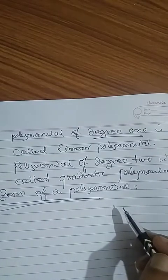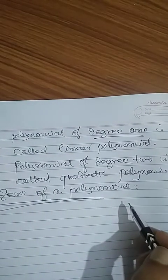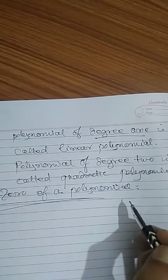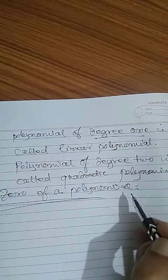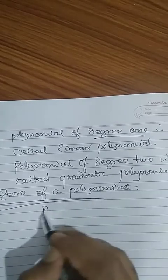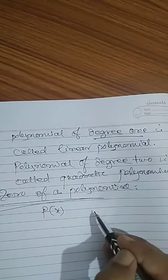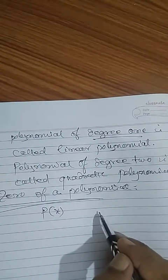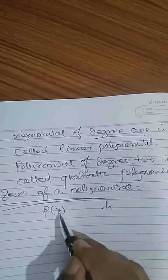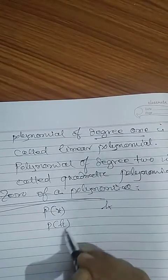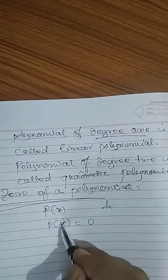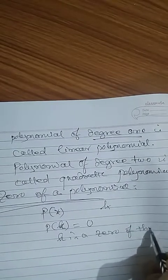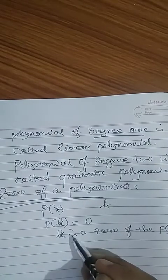Just I want to recall: by replacing the variable by any real number, if the polynomial becomes zero, then that number itself is a zero of the polynomial. Suppose P(x) is a polynomial. By replacing the variable x by k, if P(k) = 0, then k is a zero of the polynomial P(x).